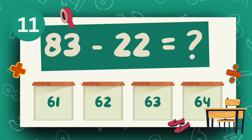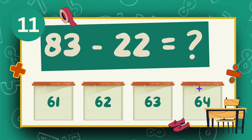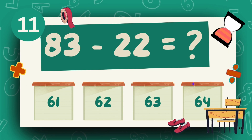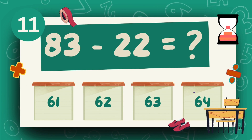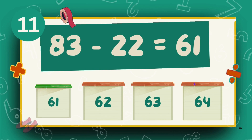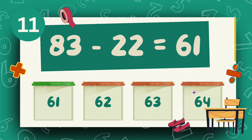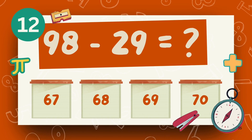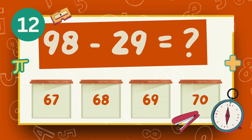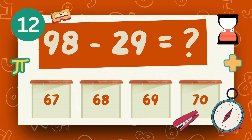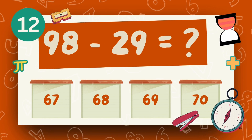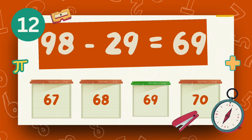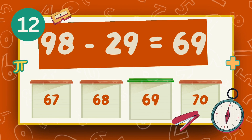What is 83 minus 22? The answer is 62. What is 98 minus 29? The answer is 69.